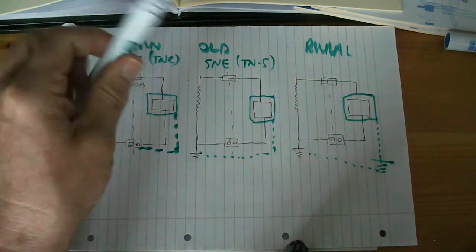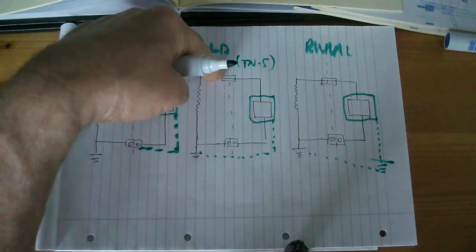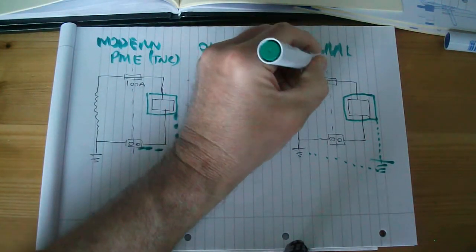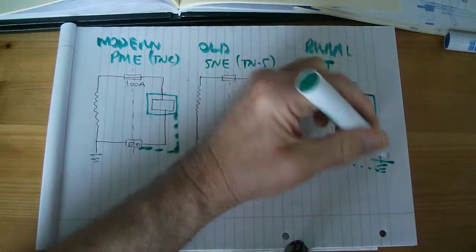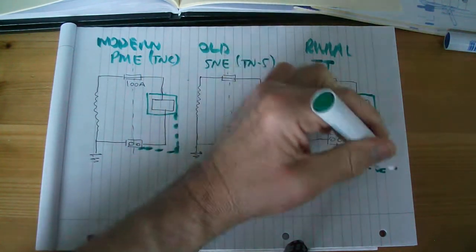So there are three basic earthing systems that you have to remember: PME, SNE, and this is called also TT, terra-terra. So it's terrain to terrain, goes from one to the other.